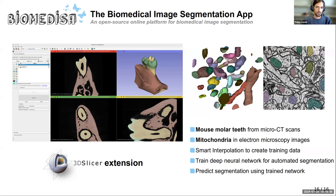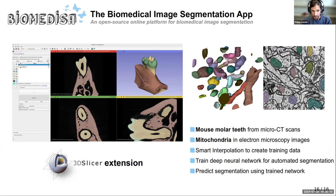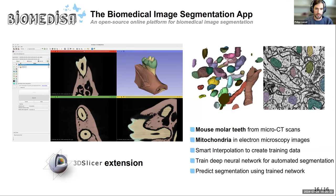Now for the hands-on workshop: I want to demonstrate the 3D Slicer extension we developed and show how it works in practice. We have two showcases — mouse molar teeth (analogous to the bee brains) and mitochondria in electron microscopy images (analogous to the roots). First we create training data using smart interpolation, then use that training data to train a neural network in Biomedisa, and finally use the network for automatic prediction.